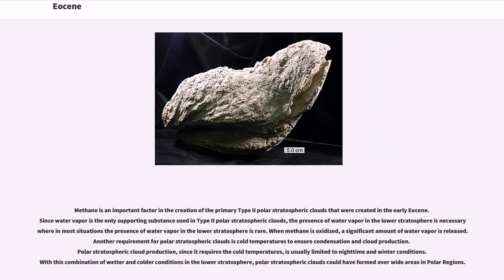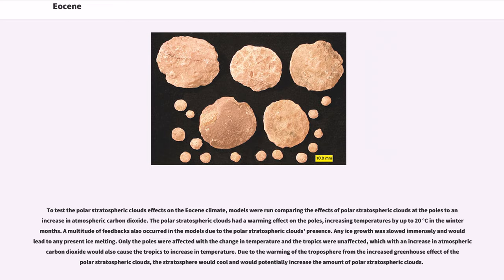When methane is oxidized, a significant amount of water vapor is released. Another requirement for polar stratospheric clouds is cold temperatures to ensure condensation and cloud production. Polar stratospheric cloud production, since it requires cold temperatures, is usually limited to nighttime and winter conditions. With this combination of wetter and colder conditions in the lower stratosphere, polar stratospheric clouds could have formed over wide areas and polar regions. To test the polar stratospheric clouds' effects on the Eocene climate, models were run comparing the effects of polar stratospheric clouds at the poles to an increase in atmospheric carbon dioxide.